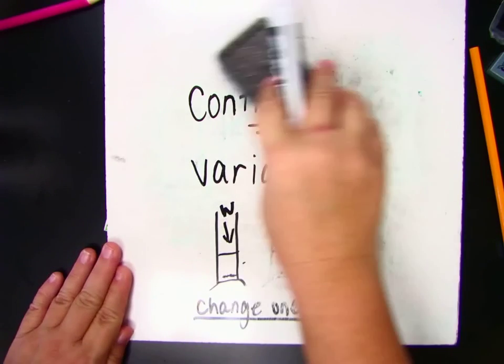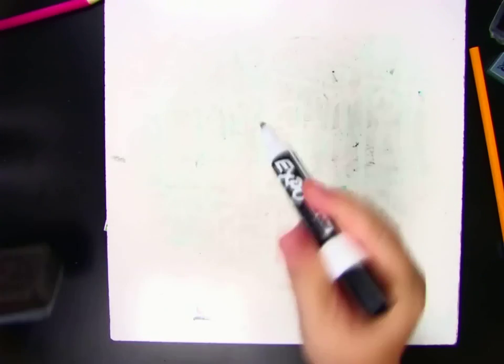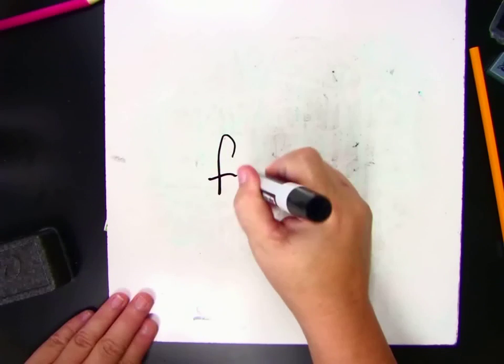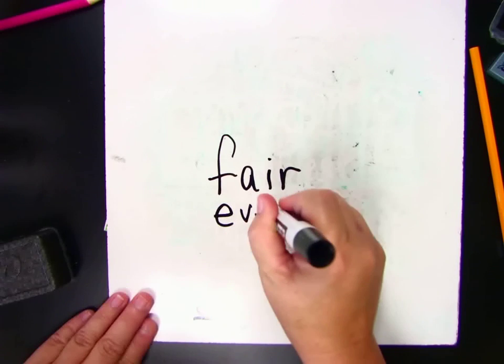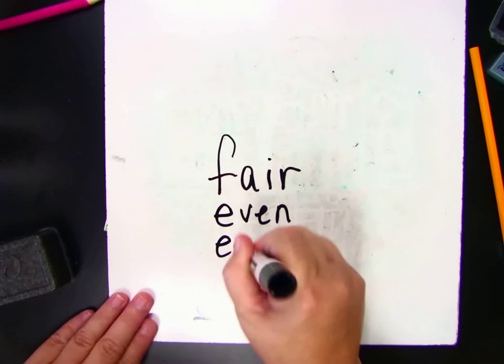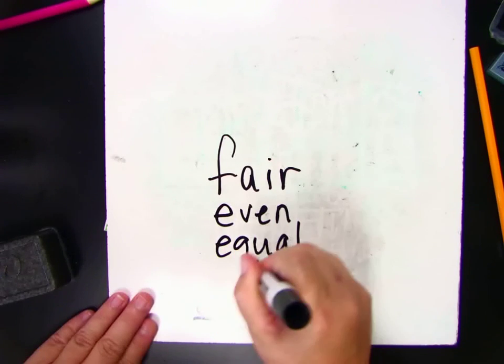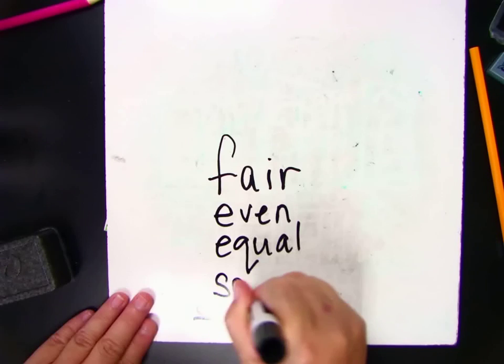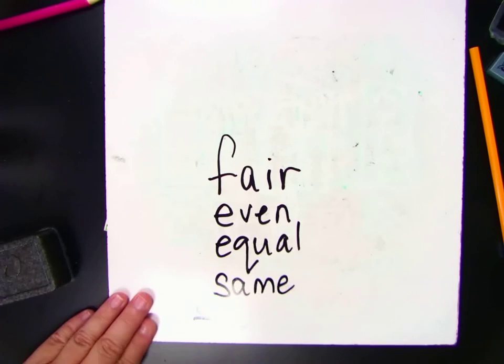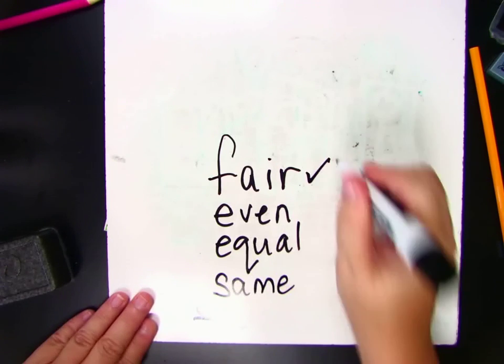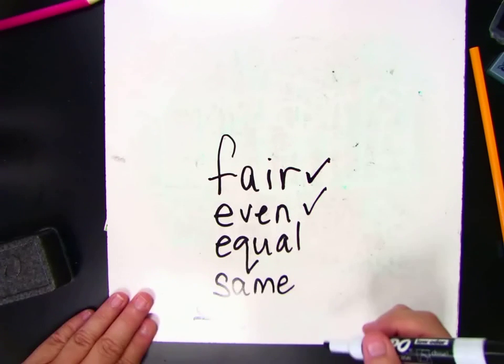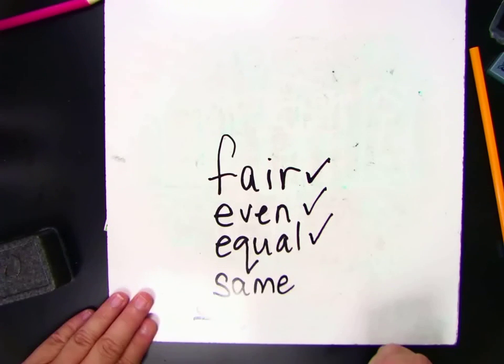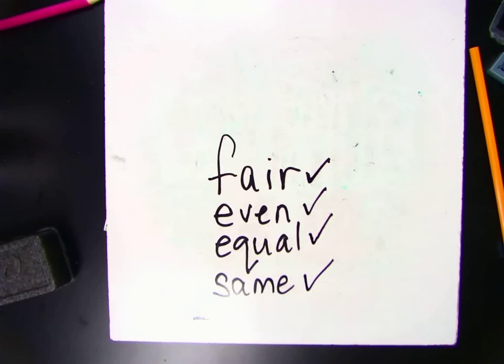Scientists control their variables to make sure everything is fair. And that is the same as even, equal, the same. All of those things mean the same thing. If things are fair, the variables are controlled. If they're even, the variables are controlled. If they're equal, the variables are controlled. And if they're the same, the variables are controlled.